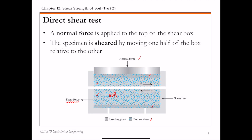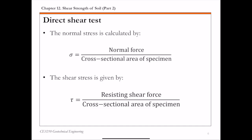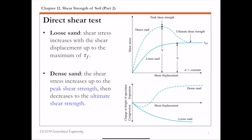From the direct shear test, you can get the normal stress, vertical displacement, shear force, and shear displacement — referred to as delta S. From the normal force and shear force, you can calculate normal stress sigma and shear stress tau by dividing force by the cross-sectional area of the specimen. The direct shear results are typically expressed in terms of stress-strain or stress-displacement, as shown on this slide.